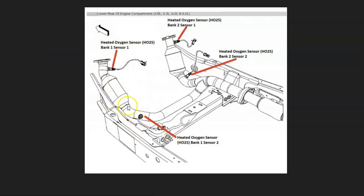The first thing to do when you get this code is locate your bank one oxygen sensors and catalytic converter. It can be a good idea to get a diagram where everything's laid out. For example, on a 2008 Chevy Silverado 4.8 liter, bank one sensor one is here, bank two sensor two is here, and here's the catalytic converter. If you can't get a diagram, bank one is always the side of the engine with the number one cylinder, and the opposite side is bank two.